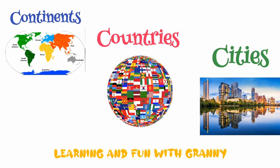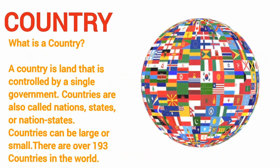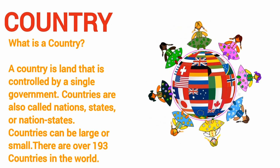World countries. There are about 193 countries. What is a country? A country is a land that is controlled by a single government.